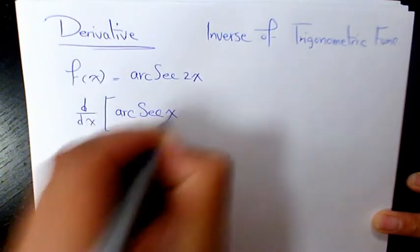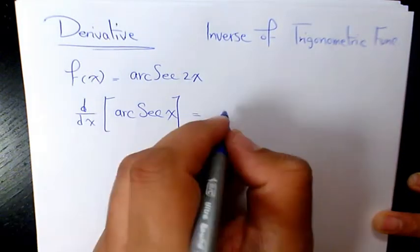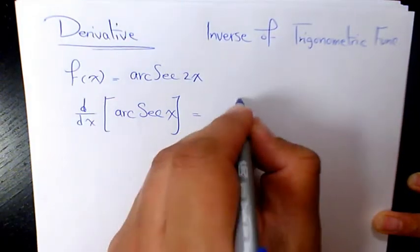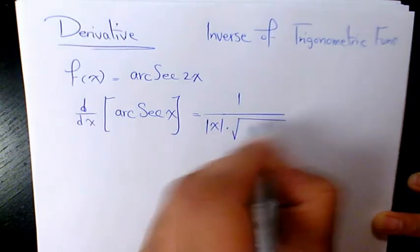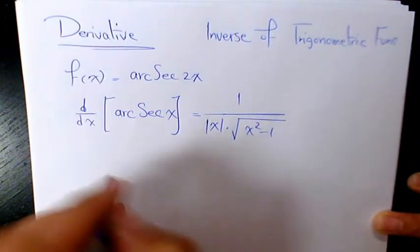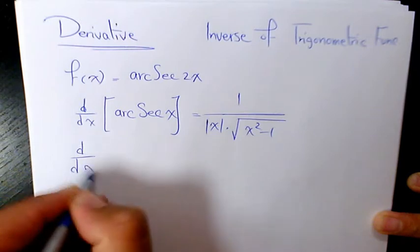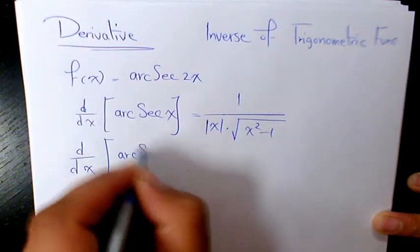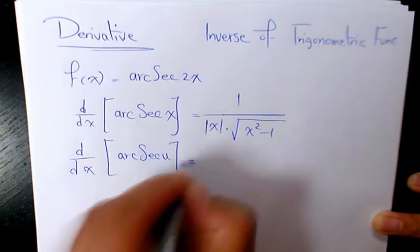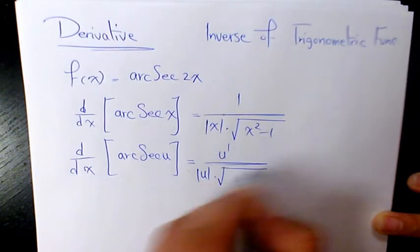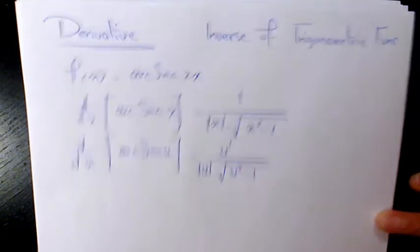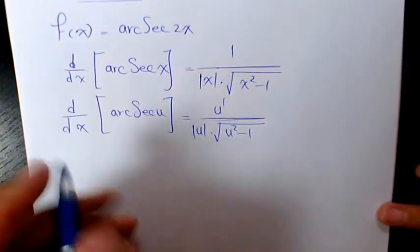We know the derivative of arc secant x, which is the inverse of secant x, is 1 over absolute function of x times square root of x squared minus 1. When you are dealing with u as a function of x, the derivative will be u prime over absolute function of u times square root of u squared minus 1.